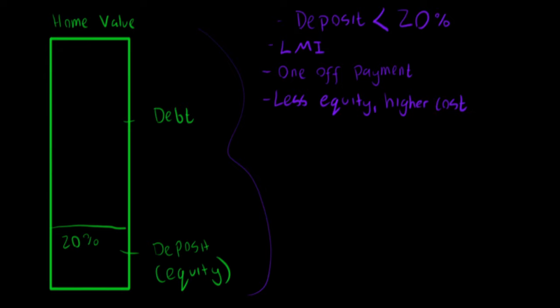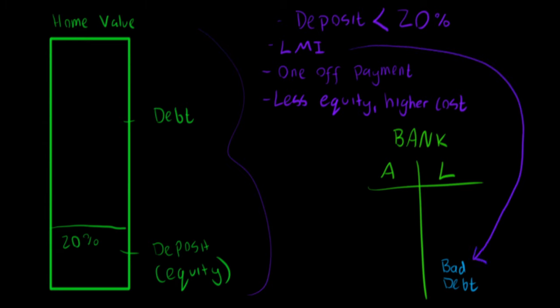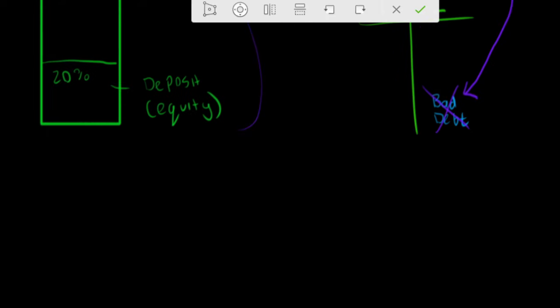The way it works is they pledge to the lender that if the borrower defaults on their payments and the foreclosure results in a net loss for the bank, the insurance provider will foot the rest of the bill. The bank is happy to accept that agreement because it protects their downside risk, which is exactly the point of insurance. And this is